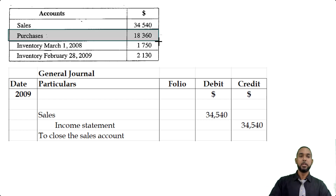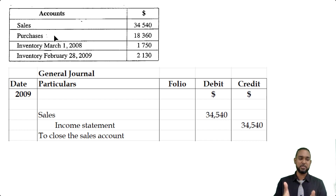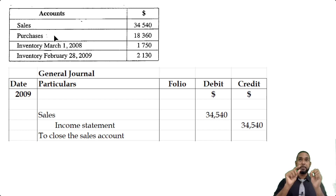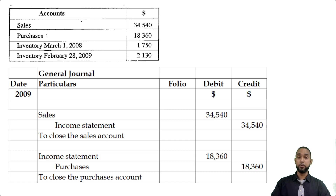The next account to close is purchases. Purchases is an expense, and expenses have debit balances. To remove a debit balance from the purchases account and transfer it to the income statement, you have to credit the purchases account. And of course you debit the other account where you're sending the balance, which is the income statement. So in the general journal: debit income statement (or trading account), credit purchases — to close the purchases account to the income statement.